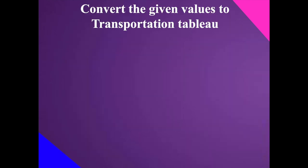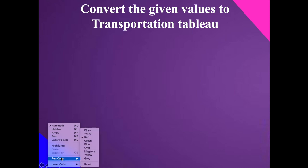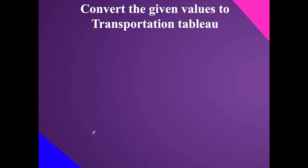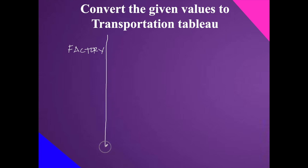Let's start the first part of our computation. Since the problem is worded without a table provided, we need to build the table ourselves. We'll set up a transportation table with factories as rows — Hanoi, Manila, Beijing — and warehouses as columns — Seoul, Sydney, Tokyo — along with supply capacity and demand. The supply column will show how many cases each factory can produce.